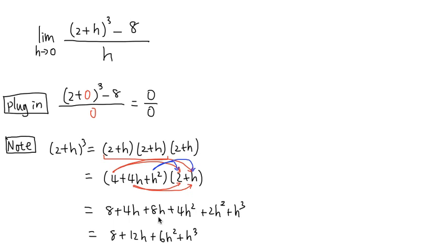Okay, so I have all this, and I can combine these terms. We can see that the 4h and the 8h together, that gives us 12h. And then here I have the 4h squared, positive 4h squared, plus the 2h squared, that gives us 6h squared. And finally, we have the h to the 3rd power right here.